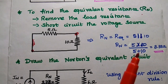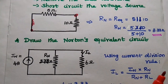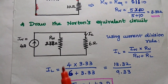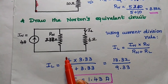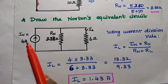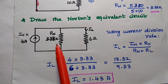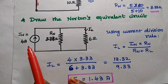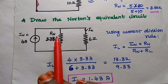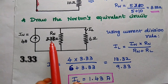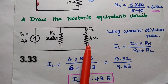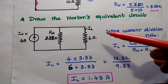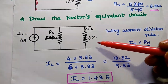Finally, we draw Natan's equivalent circuit for the given diagram: one current source in parallel with the equivalent resistance. The current value is 4 Ampere, the equivalent resistance is 3.33 Ohm, and the load resistor is 6 Ohm. We are going to find out the current through this 6 Ohm load resistor.